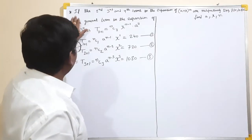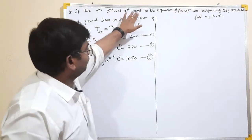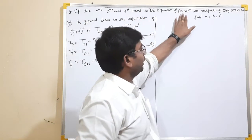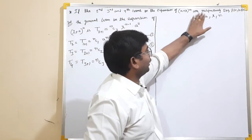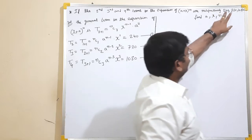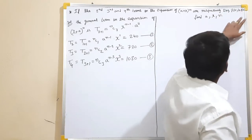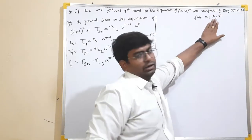So, if the second, third, and fourth terms in the expansion of (A + X) to the power of N represent 240, 720, and 1080 respectively, find A, X, and N.